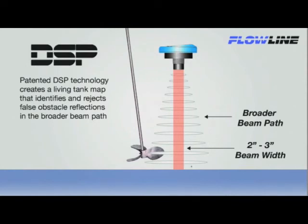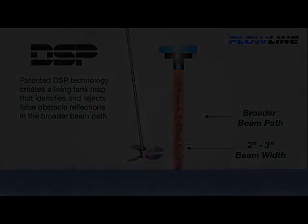This gives Flowline ultrasonic sensors a 2 to 3 inch minimum beam width across the measurement range and increases the installation flexibility of the sensor. This allows Flowline ultrasonic sensors to measure reliably in tight places or applications with obstructions.